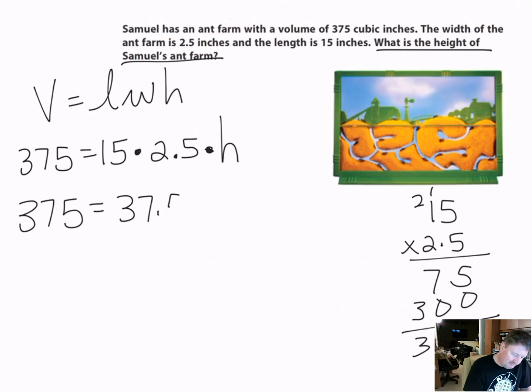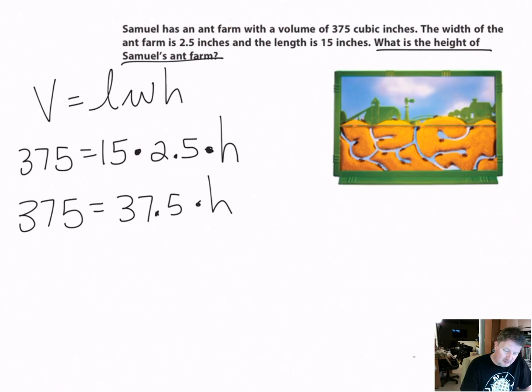375 equals 37.5 times h. So 37.5 times h equals 375. You may be able to look at it and say 'I know what that is already,' and if you do, that's great - you're starting to get the hang of math.